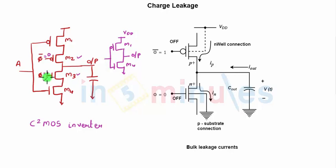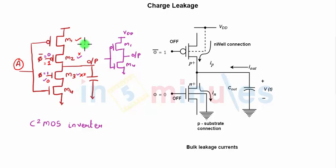A question might arise: what would happen if phi is equal to 0 and phi bar is equal to 1? In that case, M2 and M3 transistors would both be off. It does not matter what value is present on A, because M1 does not have a path to the output, and M4 also does not have a direct path towards the output. VDD does not have a path towards the output, and the output does not have a path towards ground, because the two in-between transistors are off.